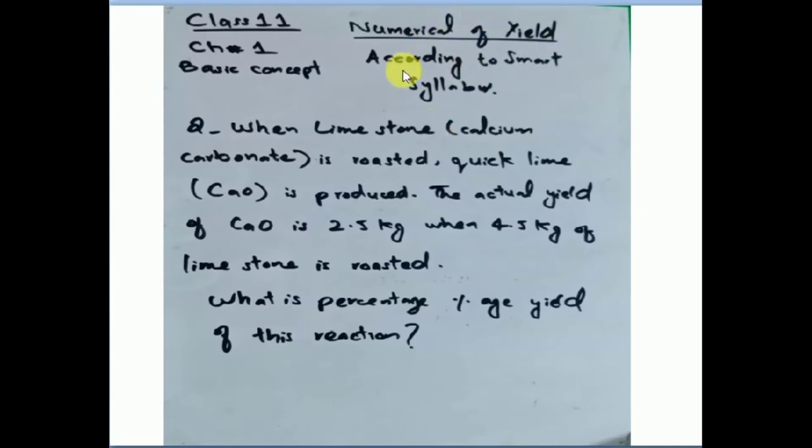Bismillahirrahmanirrahim. So numerical of yield. Because in this chapter, there is one numerical of yield. So you need to do this according to smart syllabus. Now we have a question. A limestone, which is calcium carbonate, it is roasted. So what we have produced? A quick lime, CaO is produced. We have told it the actual yield. What is the percentage yield of this reaction?